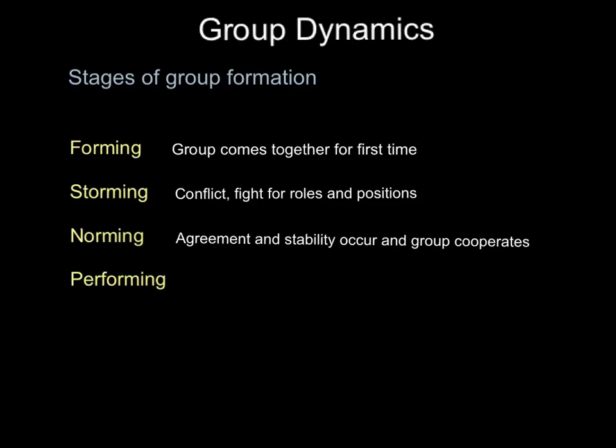Once your coach or leader gets you through the storming phase, you'll hopefully be in the norming phase, where you get some agreement, stability, and start to cooperate. The conflict has calmed down — it's called norming because everything is hopefully now going to get normal. Then finally, once that occurs, we can hopefully get our team into the performing stage, where we start producing high-quality performances and begin to achieve. You want to get through to the performing stage as quickly and effectively as possible, but you have to go through all four stages.